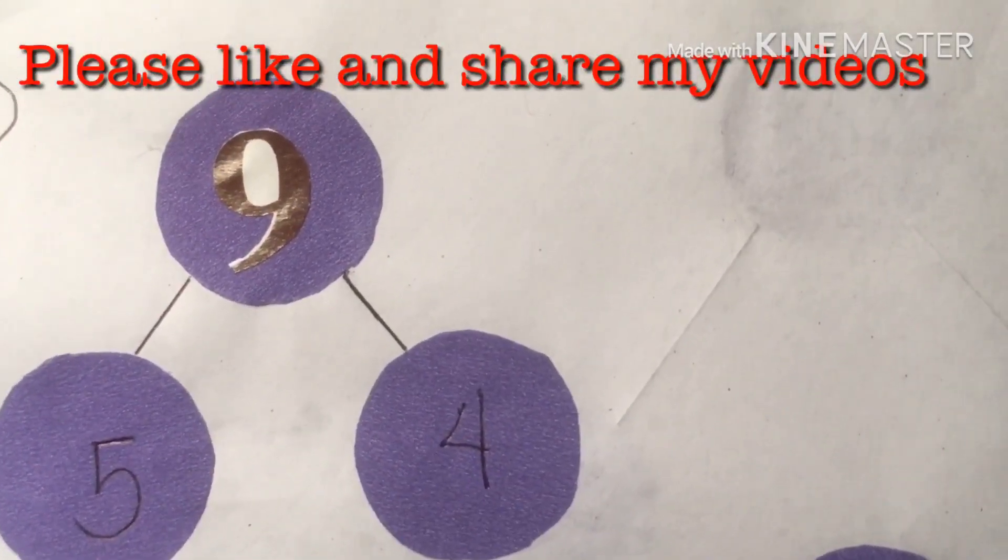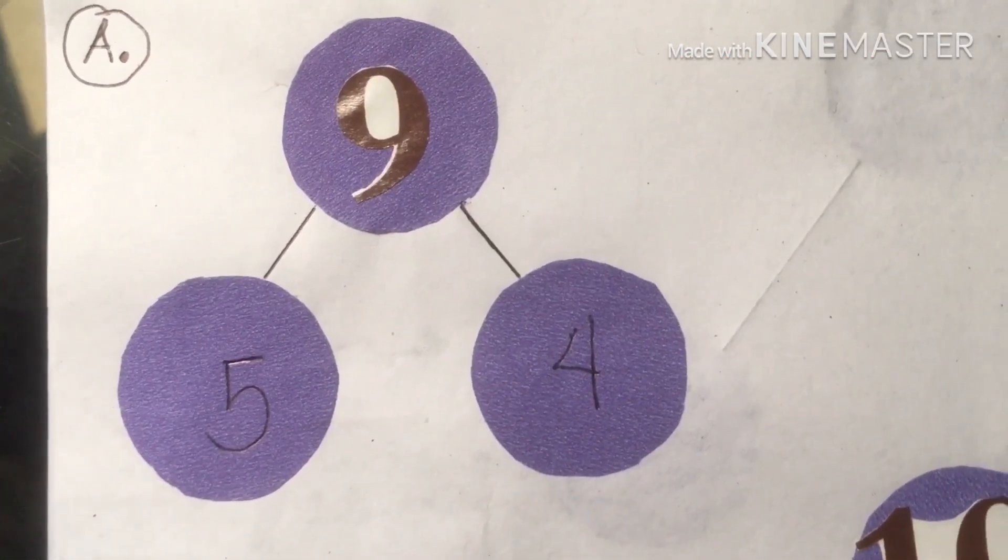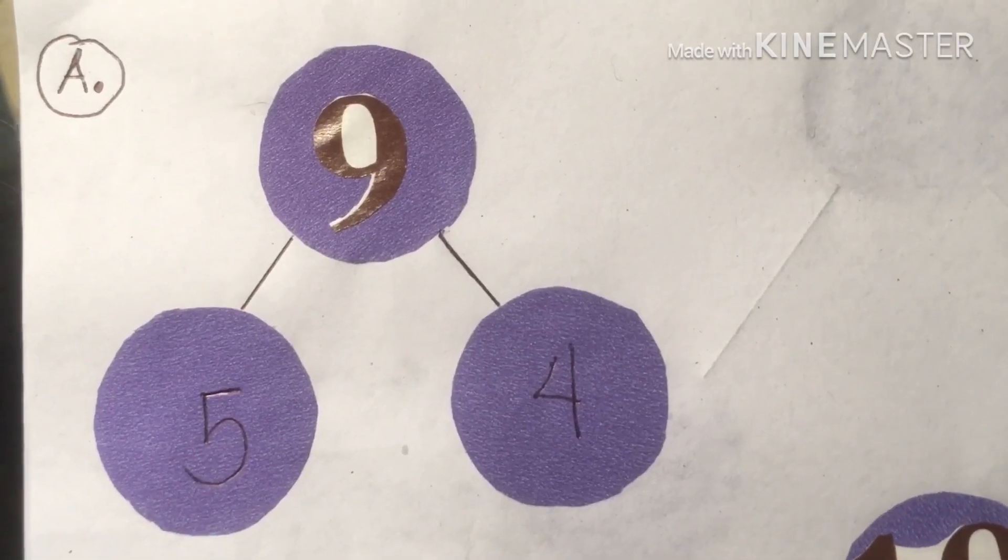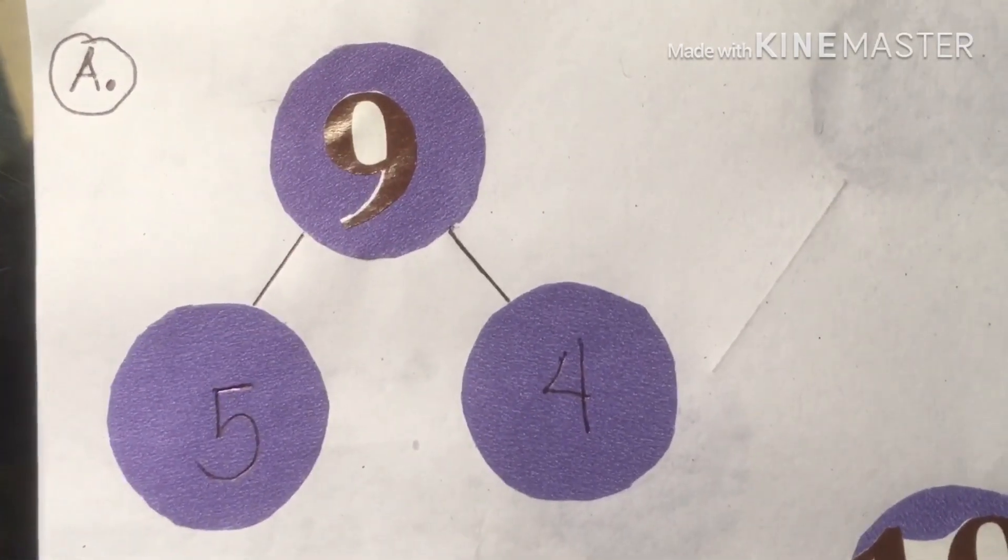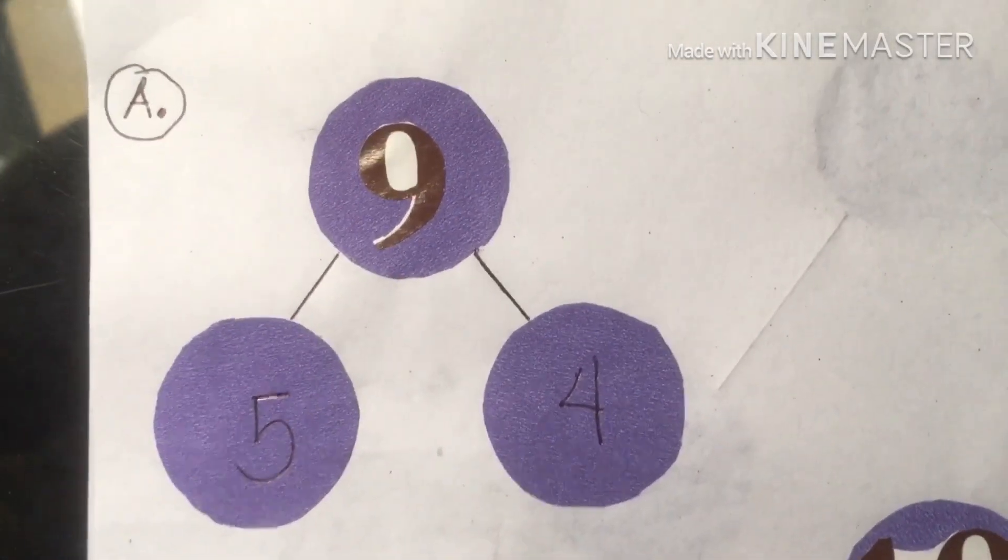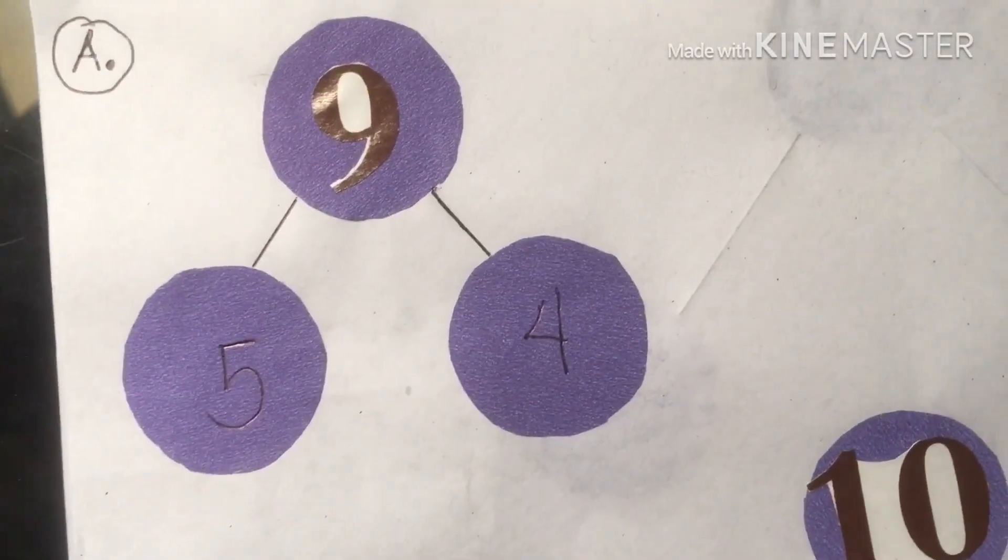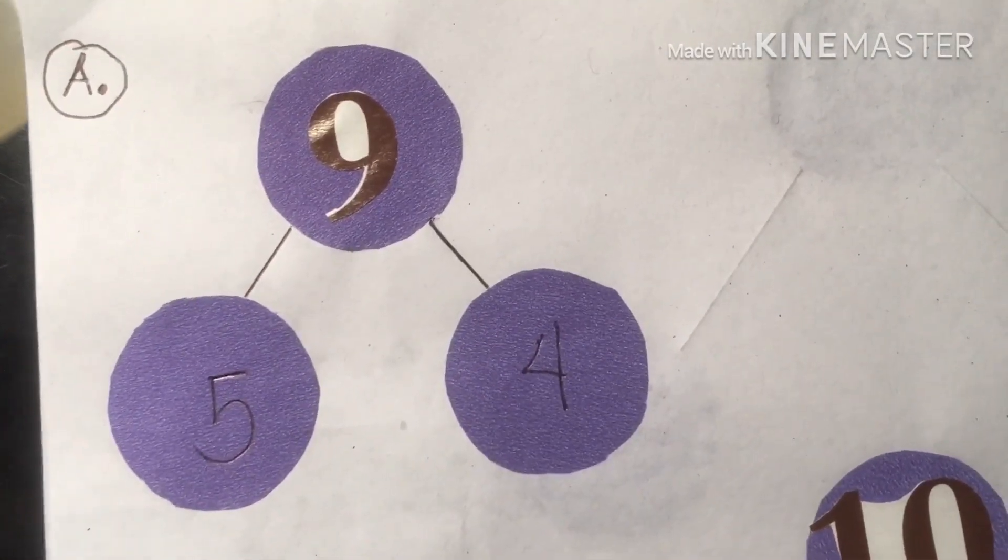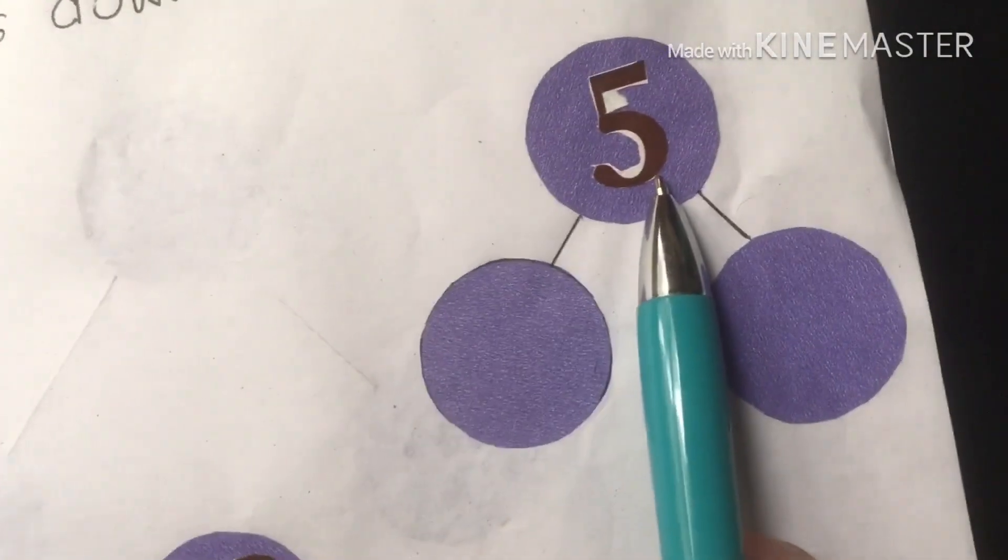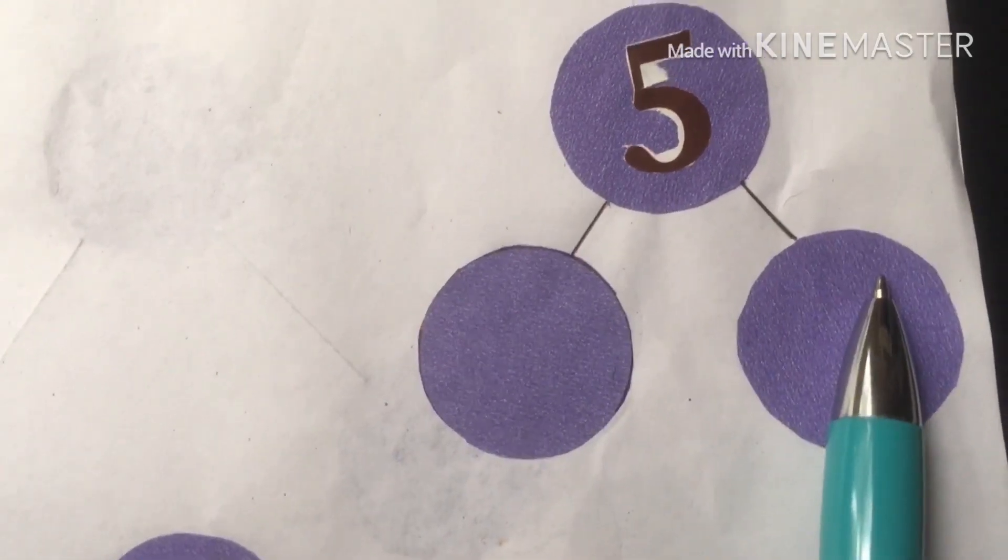But remember class, in composing 9, it's not only 5 and 4. We can compose another number to make it 9. But here in our given problem, we have only 9, so we're going to compose 5 and 4. But it's up to you class, where you are going to compose 9 in a different way, because there are many ways on how to compose and how to break the numbers down.